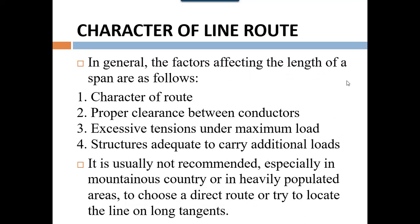In general, the factors affecting the length of a span are: one, character of the route; two, proper clearance between conductors; three, excessive tension under maximum load; four, structure adequate to carry additional load. These are the primary four factors to consider. It is usually not recommended, especially in mountain country or heavily populated areas, to choose a direct route or try to locate the line in a dangerous area.